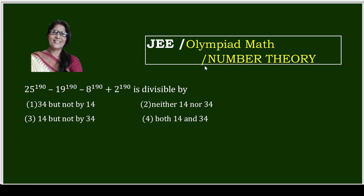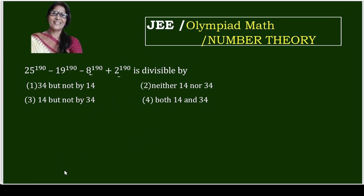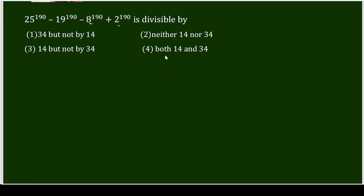It can also be an Olympiad-level question because it is based on number theory. The question is: 25^190 minus 19^190 minus 8^190 plus 2^190 — is it divisible by? It is an MCQ type question. Options are: (1) 34 but not 14, (2) neither 14 nor 34, (3) 14 but not 34, and (4) both 14 and 34.